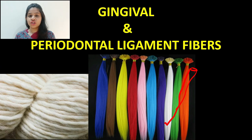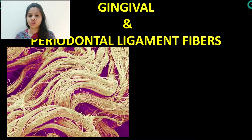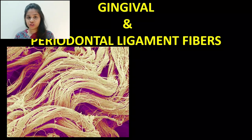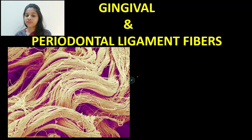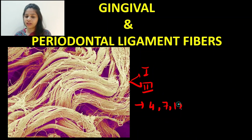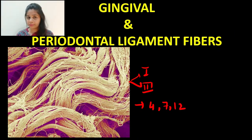In the case of gingival and periodontal tissues, the fibers are natural in origin and are mainly made up of collagen fibers. We have type 1 and type 3 collagen which are mostly found in these tissues. Apart from that, other collagens like type 4, type 7, and type 12 are found in minor amounts and they usually form the meshwork.